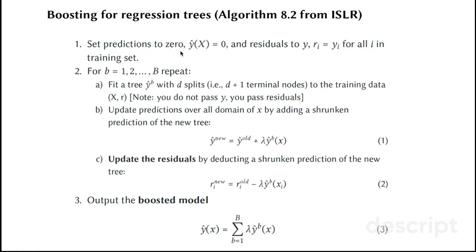Set predictions to zero and residuals to y. Then, for trees number 1 to B, repeat the following steps. You train the decision tree to predict the residuals on the predictors, update predictions according to this formula, update residuals, and continue again and again with new residuals, with new predictions. In the end, the output of the boosted model is the prediction y conditional on x, where it sums up all of the predictions from all different trees.